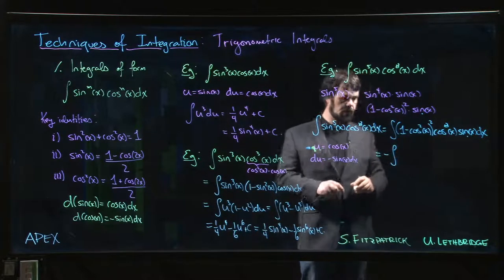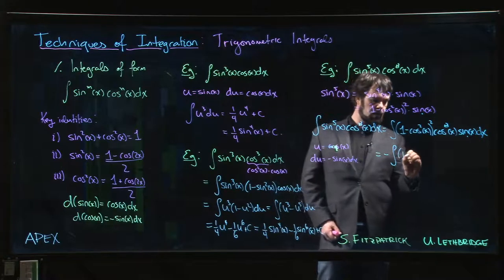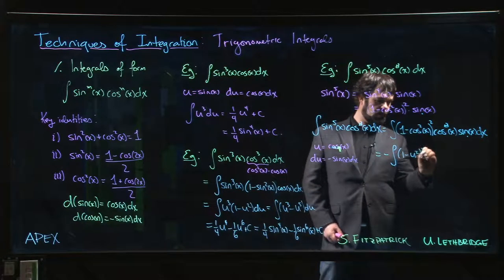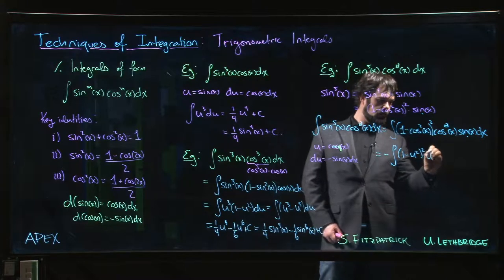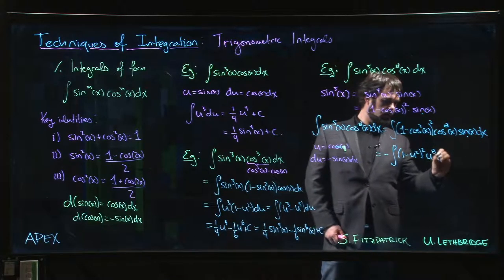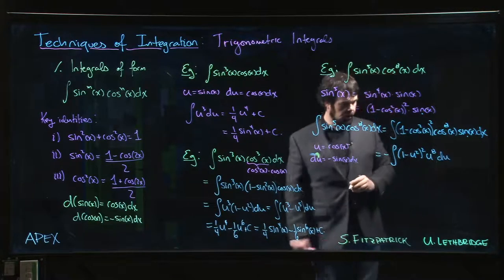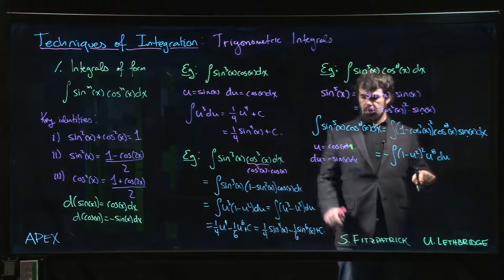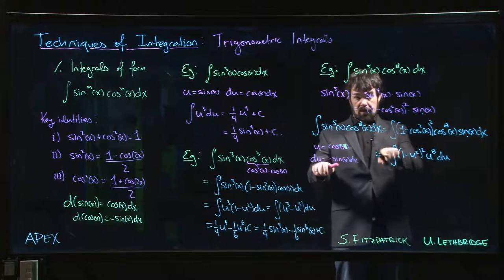So this is going to be (1 - u²)² times u⁸ times du. Sine x dx is du up to a minus sign - we put that minus sign out front.